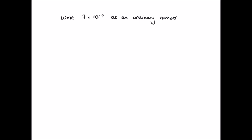We'll now see how this works with negative powers. For example, 7 times 10 to the power of negative 5. It's worth noting that 10 to the power of negative 5 is the same as 1 divided by 10 to the power of 5. So an alternative way to think about this is 7 divided by 10 to the power of 5 — we divide by 10 five times. Just as multiplying by 10 moves digits to the left, dividing by 10 moves them to the right. Moving the 7 five spaces to the right gives us 0.00007. So 7 times 10 to the power of negative 5 as an ordinary number is 0.00007.